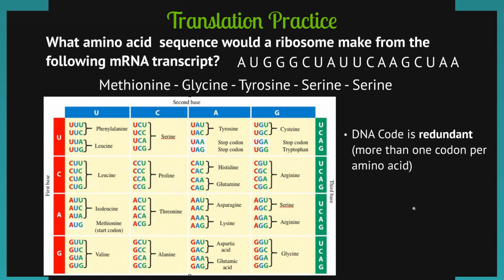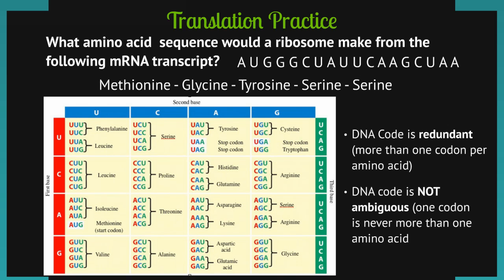Remember, we only have 20 different kinds of amino acids, but there are actually 64 different combinations of codons. Equally important is that the DNA code is not ambiguous — one codon never equals more than one amino acid. If you have CCU, it always means proline; it doesn't sometimes mean serine. The code works really, really well — there's redundancy built in, but it's never ambiguous.